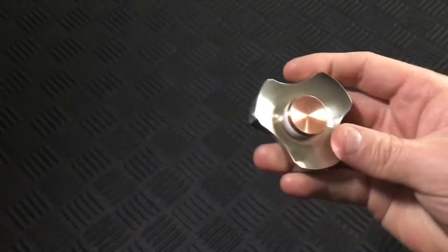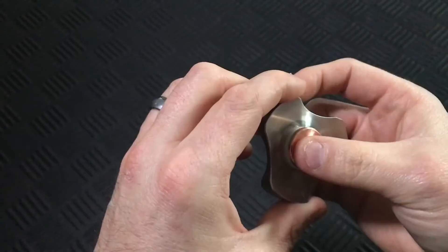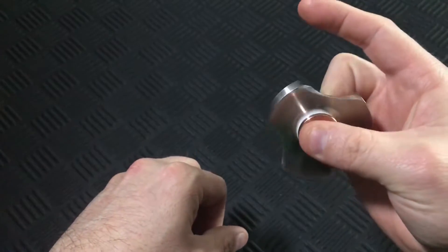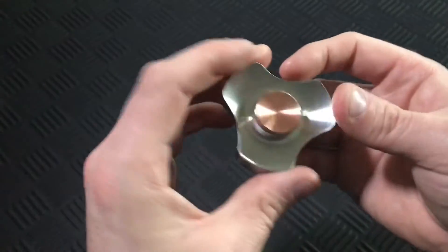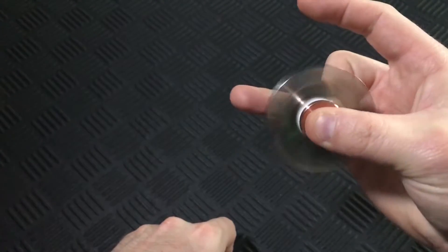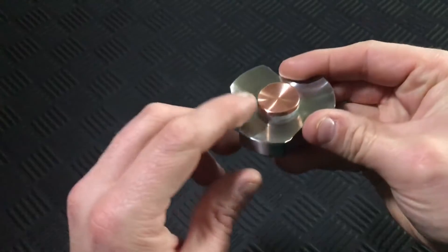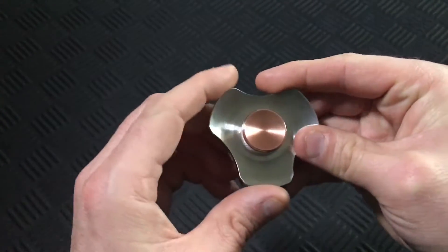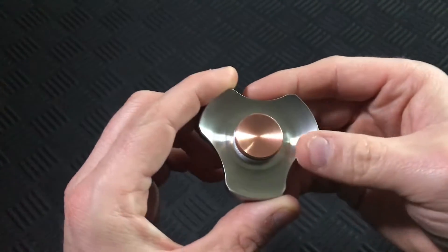Moving on, we have the Triton 1.2 from VCE DC, and this guy is a ton of fun to fidget with. And surprisingly, it had a seven minute table spin, which kind of blew me away. I love the curvature of the design and how smoothly it spins, even without an R188 bearing.